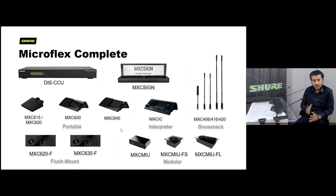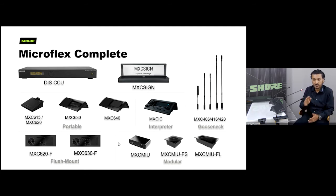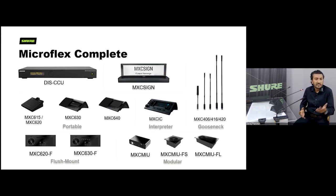There are also additional accessories to help identify participants — for example the MXC Sign, an electronic name sign that looks like paper but is electronic and becomes part of the chain to visually identify delegates at their seats. Different gooseneck options are available based on your requirements: single flex, dual flex, or a very short six-inch shotgun microphone that doesn't protrude significantly on camera. All of these connect back to the CCU, which runs the entire chain.